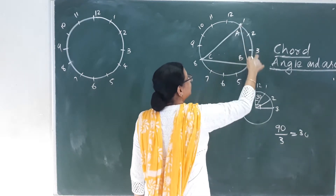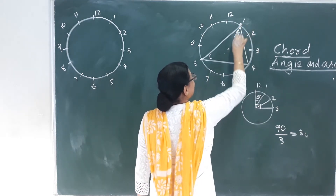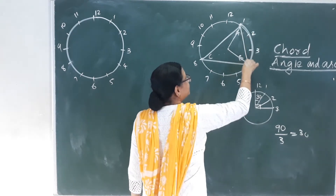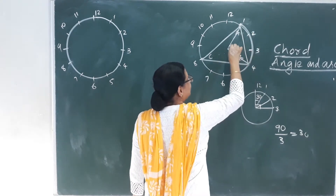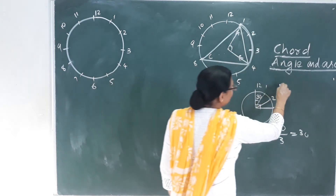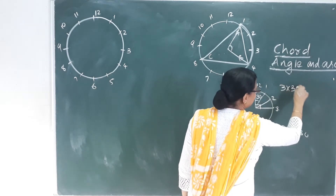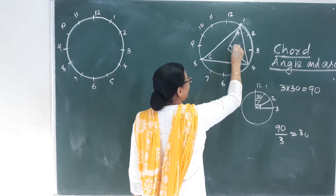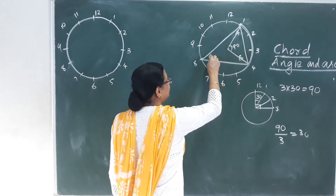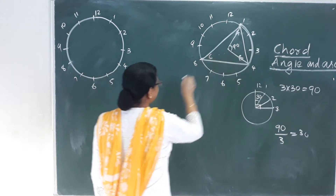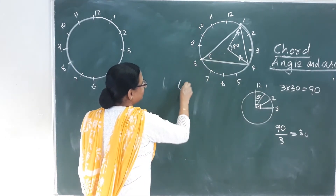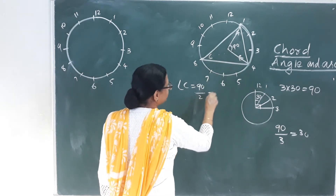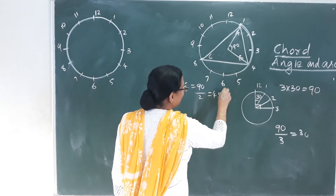The central angle between 1 and 4 is 3 intervals into 30 degrees, which equals 90 degrees. The inscribed angle C is equal to 90 divided by 2, which equals 45 degrees.